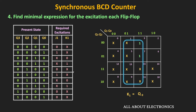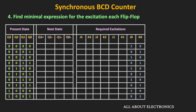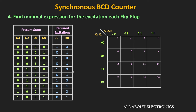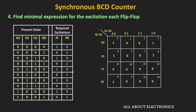For J0: it equals 1 for 5 input combinations, with 5 don't care terms plus 6 unused states treated as don't cares. Mapping covers the entire K-map, so J0 = 1. Similarly, K0 = 1. In this way, we got the minimal expression for each input of the counter.